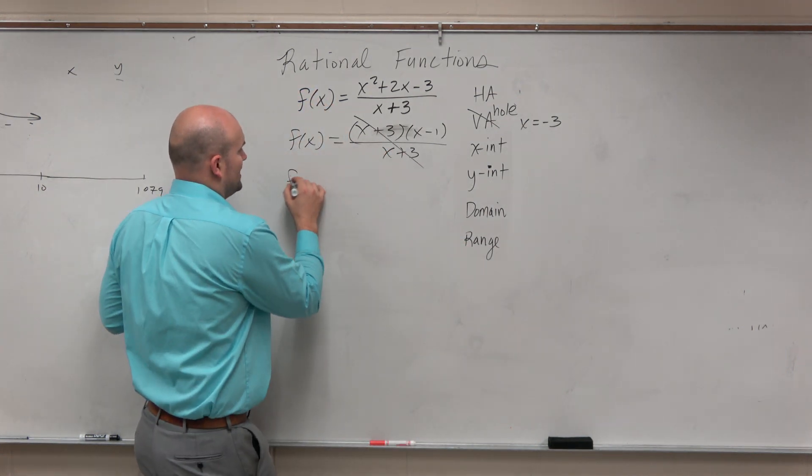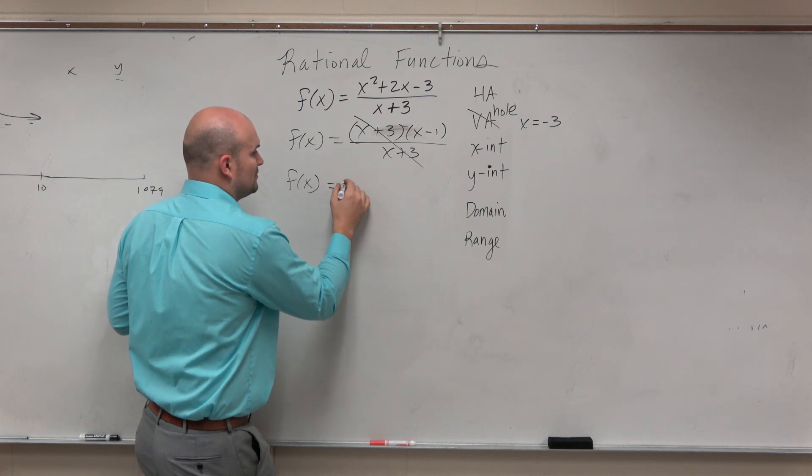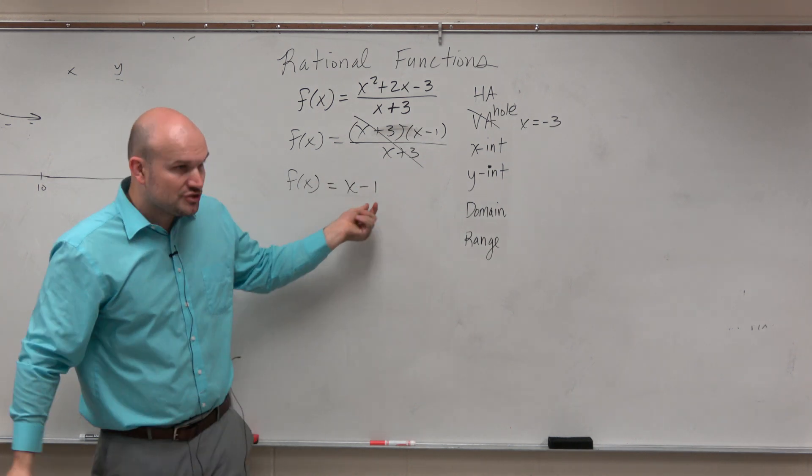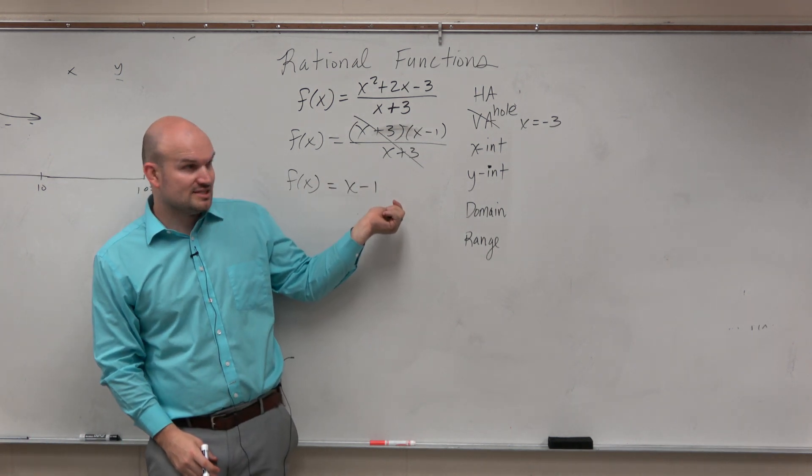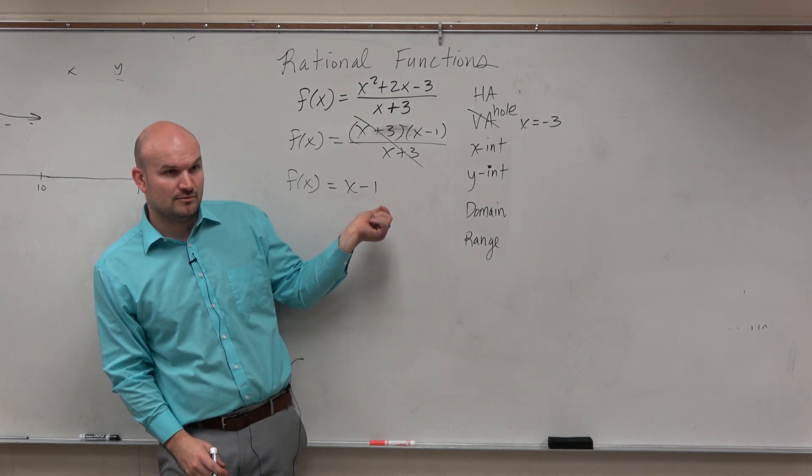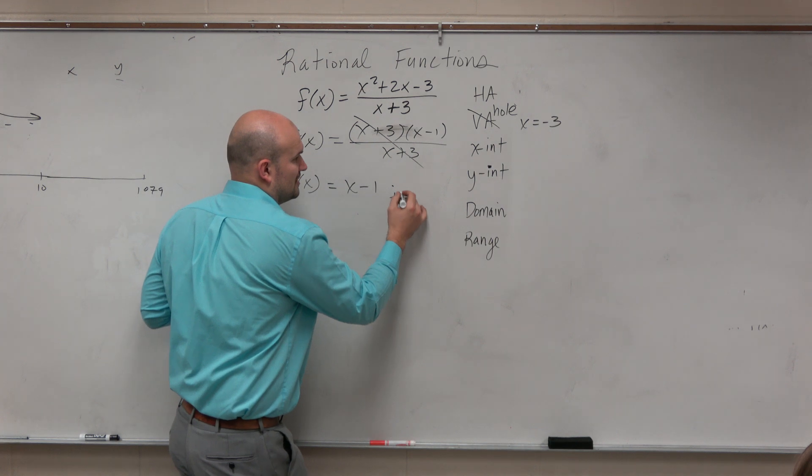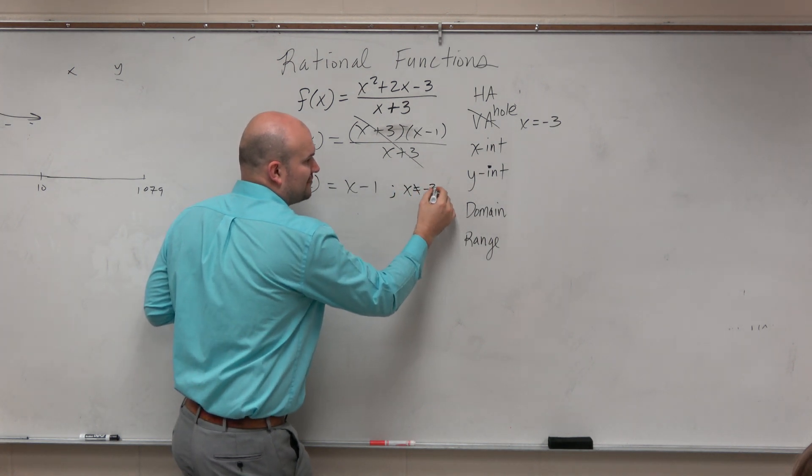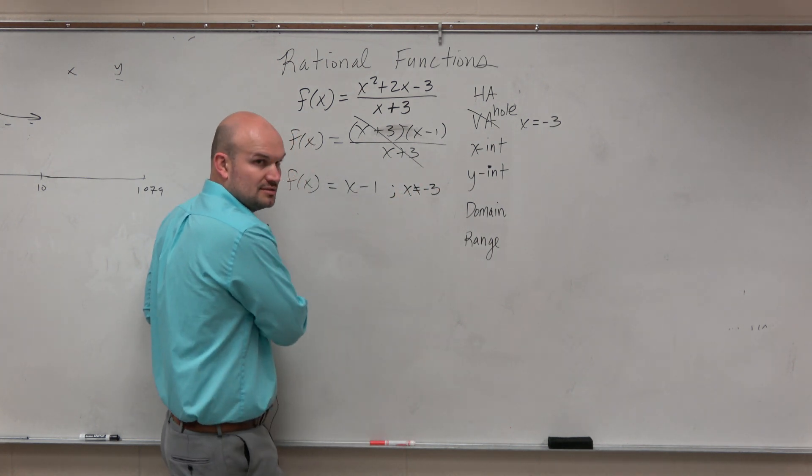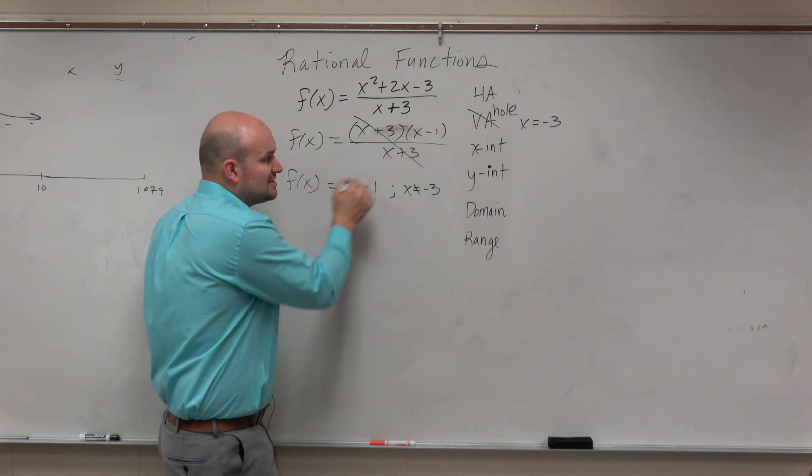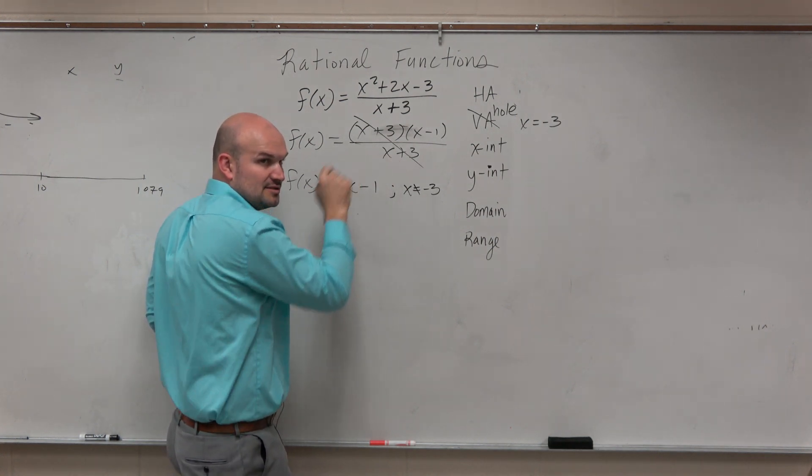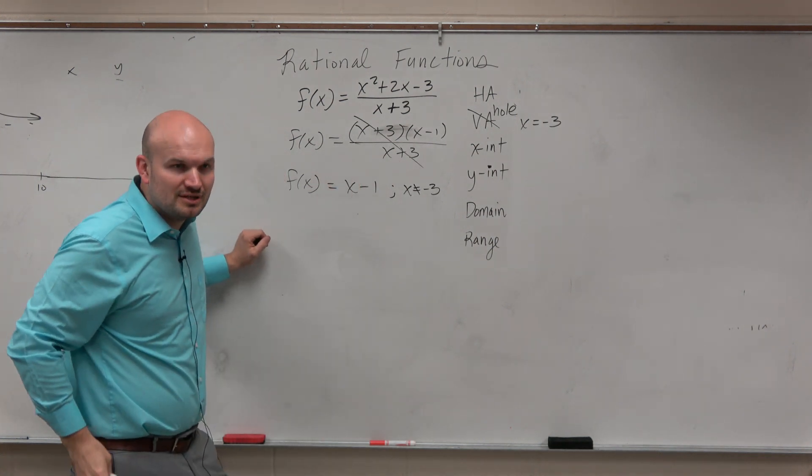So when you simplify this, you are now left with a function f of x equals x minus 1. But there's a restriction on this function, right? What's the restriction on the function x minus 1? What can x not equal? x cannot equal negative 3 because that's where the hole occurs. That's where the discontinuity occurs.